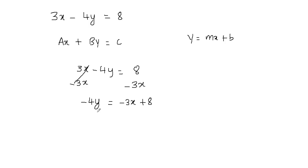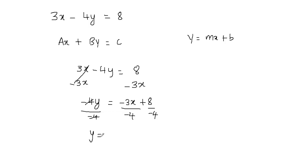In order to get y by itself, we need to get rid of the negative 4. Since negative 4 is multiplied by y, we do the opposite — we divide both sides of the equation by negative 4, dividing every term by negative 4. So we divide negative 3x by negative 4 and 8 by negative 4. Negative 4 cancels, leaving y by itself. Negative 3 divided by negative 4 — negatives cancel to give positive — so we get three-fourths x. And 8 divided by negative 4 is negative 2.